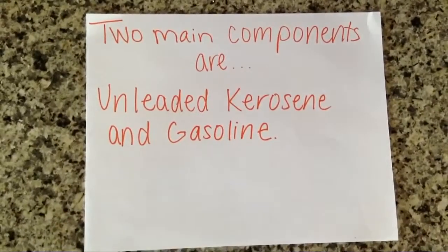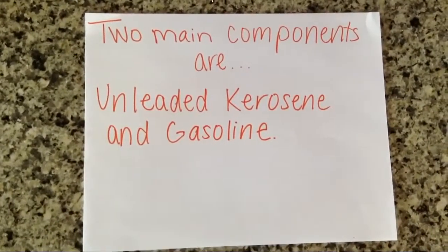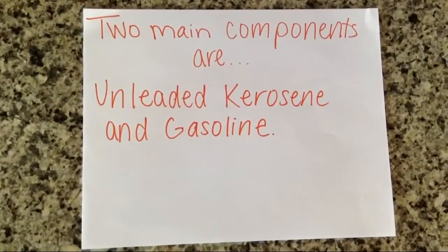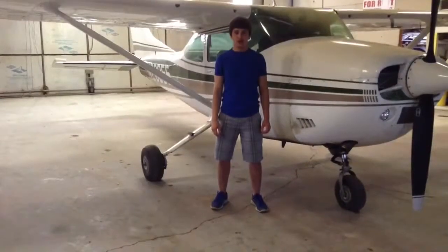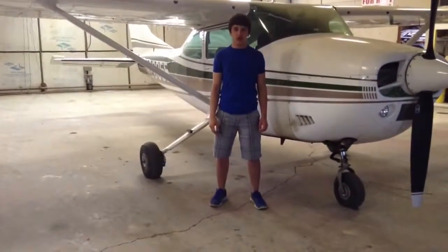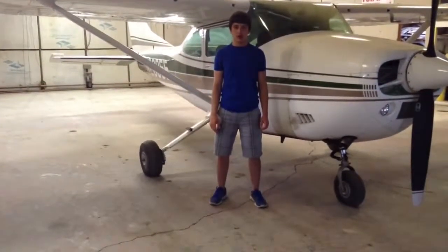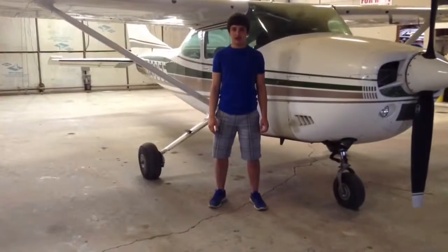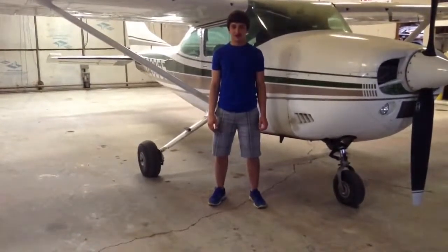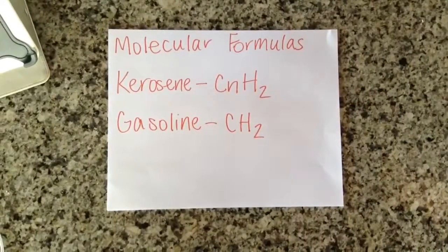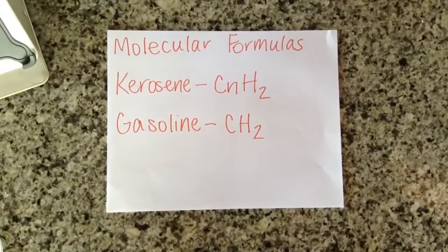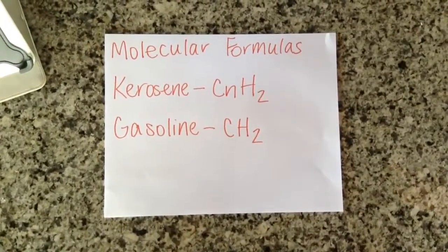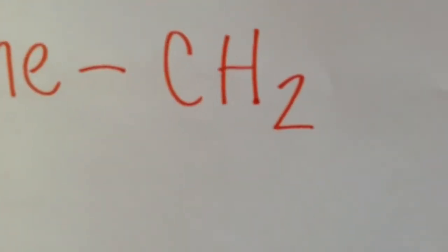The two main components of jet fuel are unleaded kerosene and gasoline. Kerosene allows jet fuel to burn hotter, while gasoline prevents it from freezing inside the airplane's gas tanks. The molecular formulas for kerosene and gasoline are CN-H2 and CH-2.